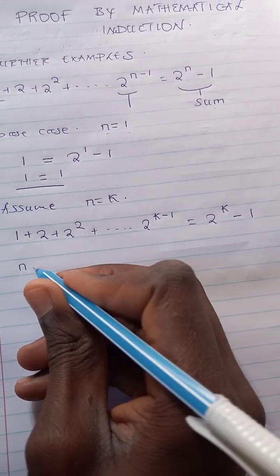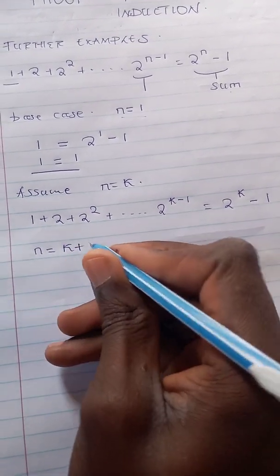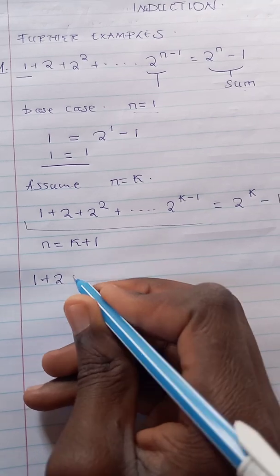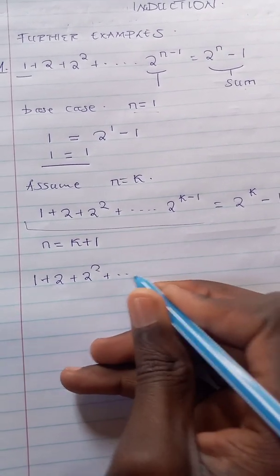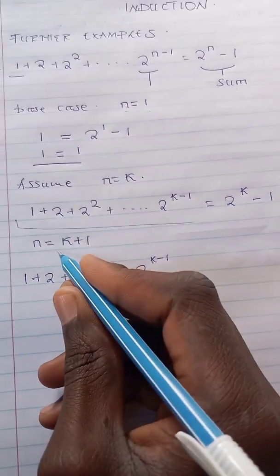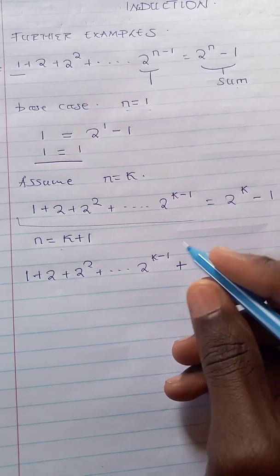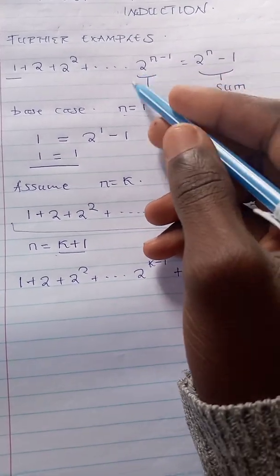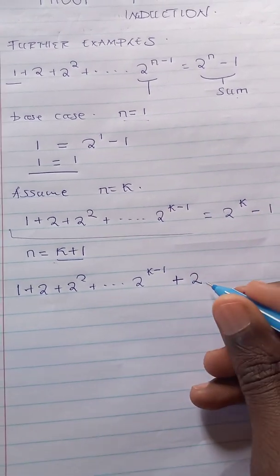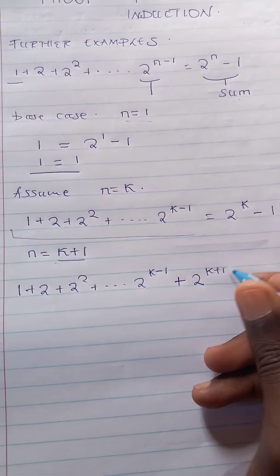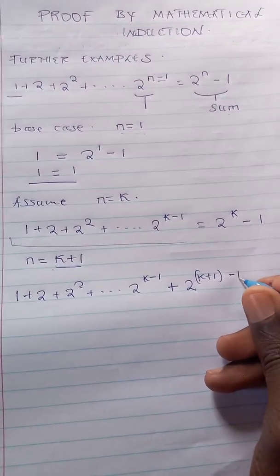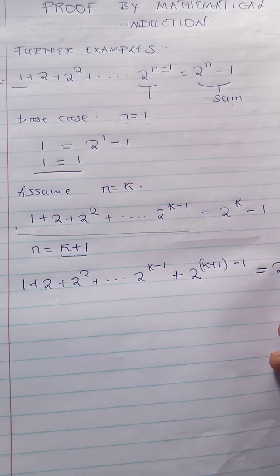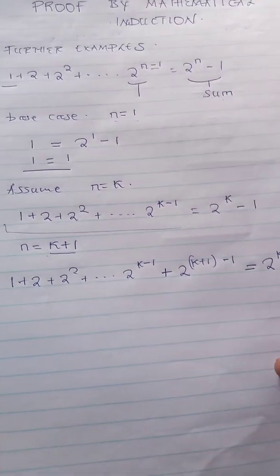From there, we let n be k plus one. We introduce this new term, so we continue: one plus two plus two squared plus dot dot dot plus two to the k minus one, plus the new term. The new term is two to the k plus one minus one, because this is the formula for the nth term with n replaced by k plus one. This is supposed to be equivalent to two to the k plus one minus one.